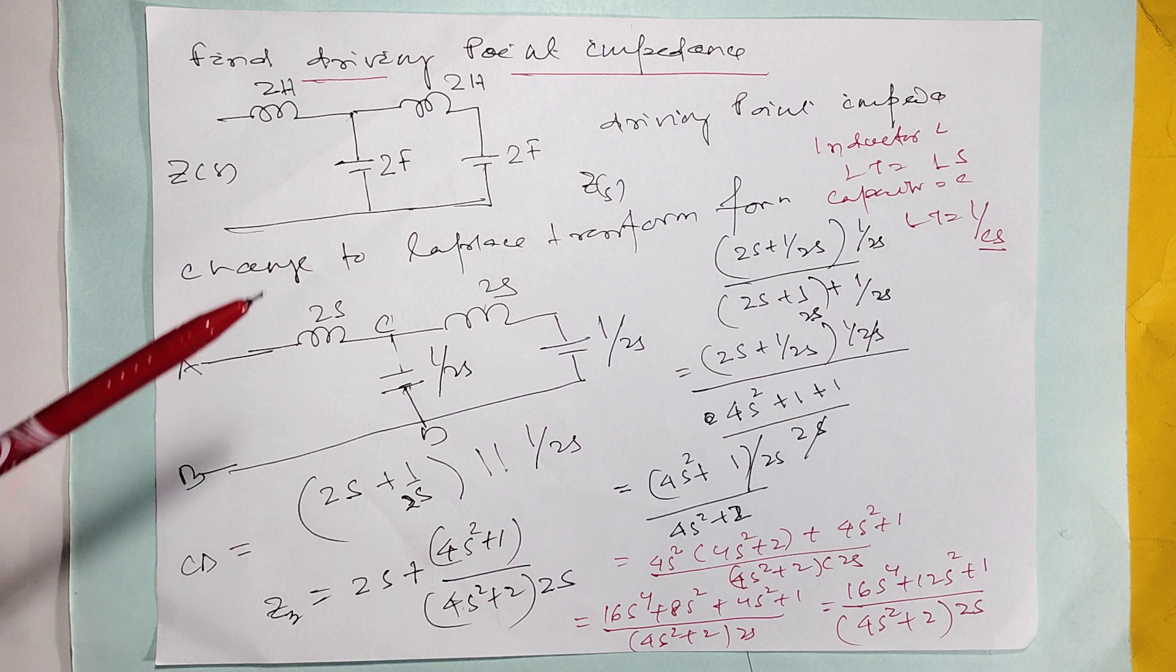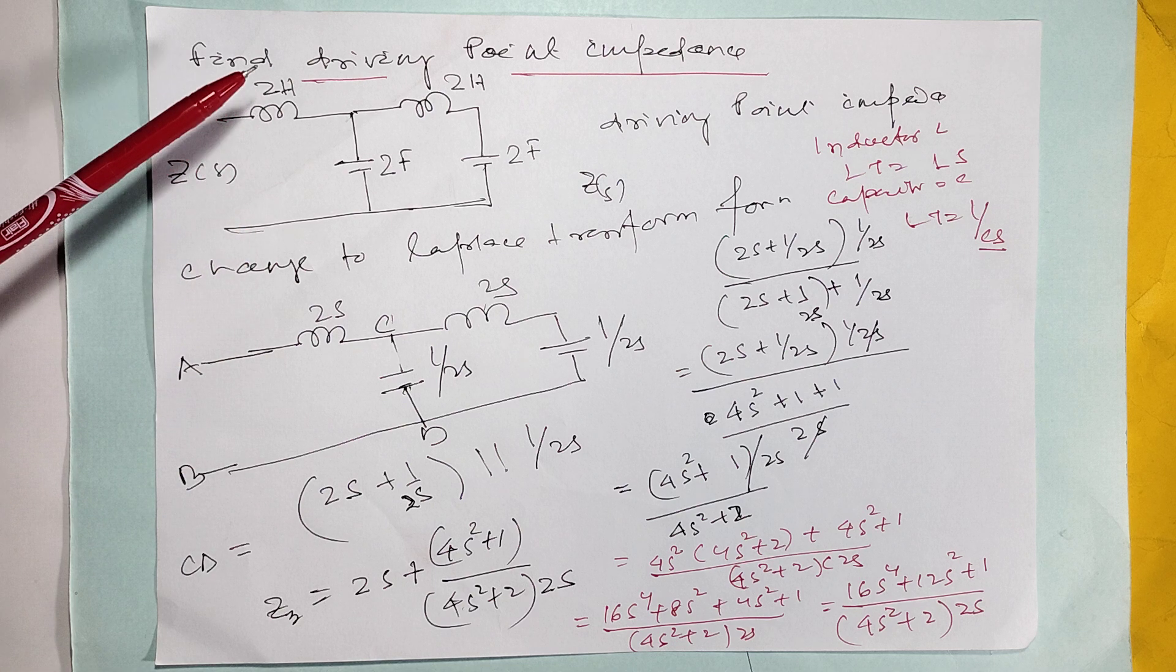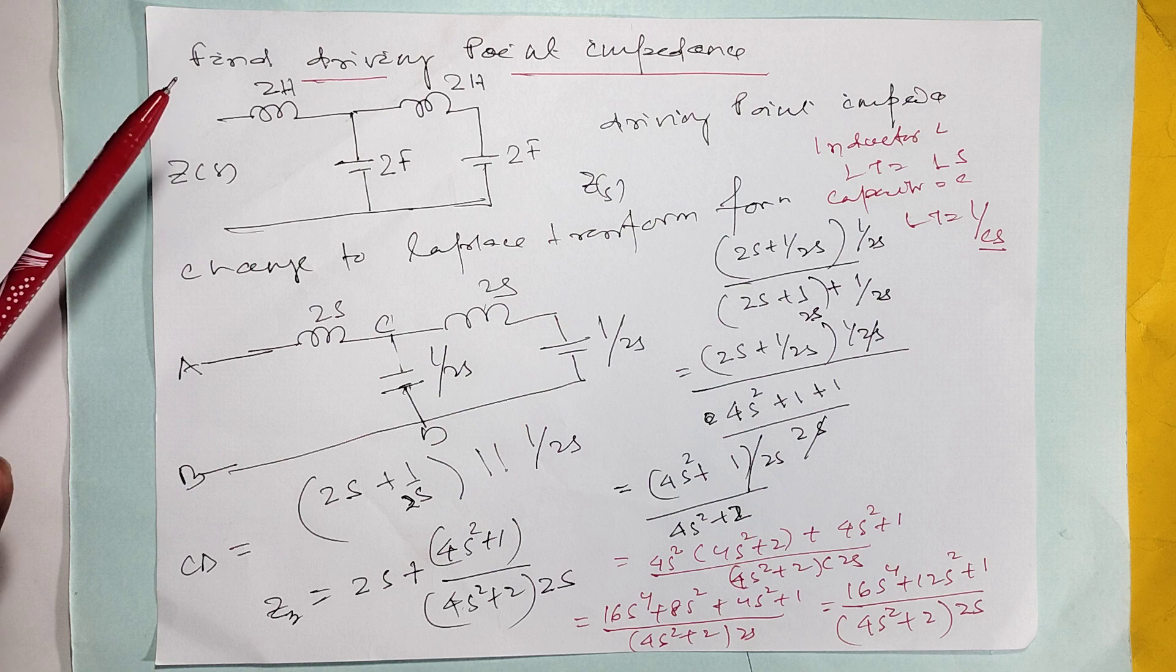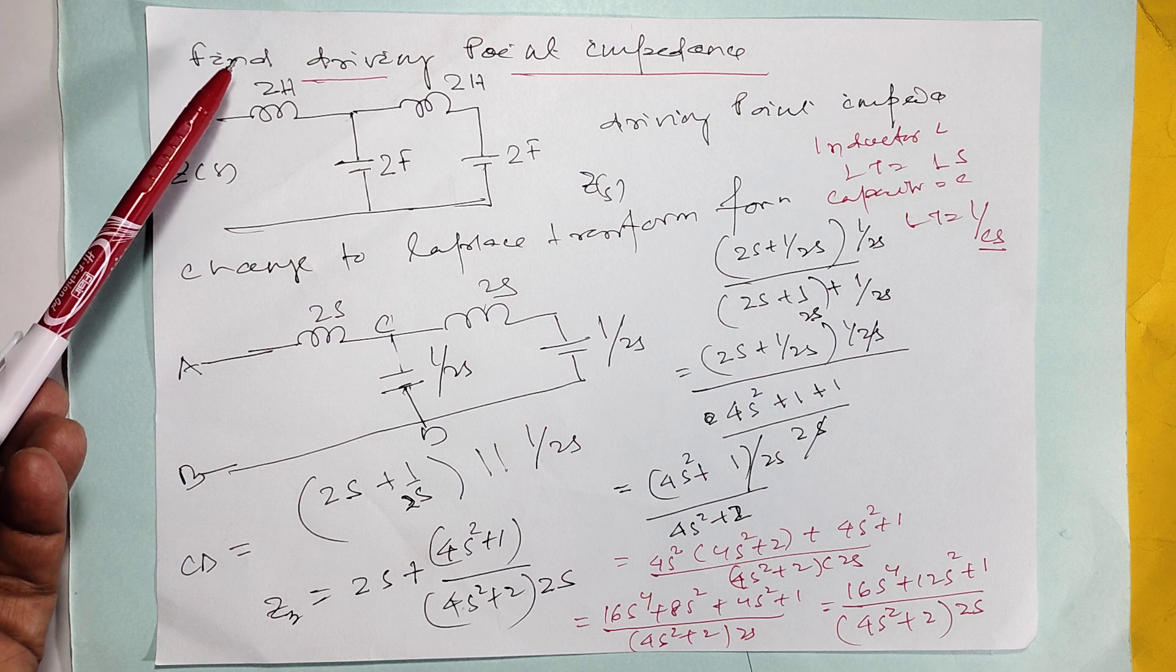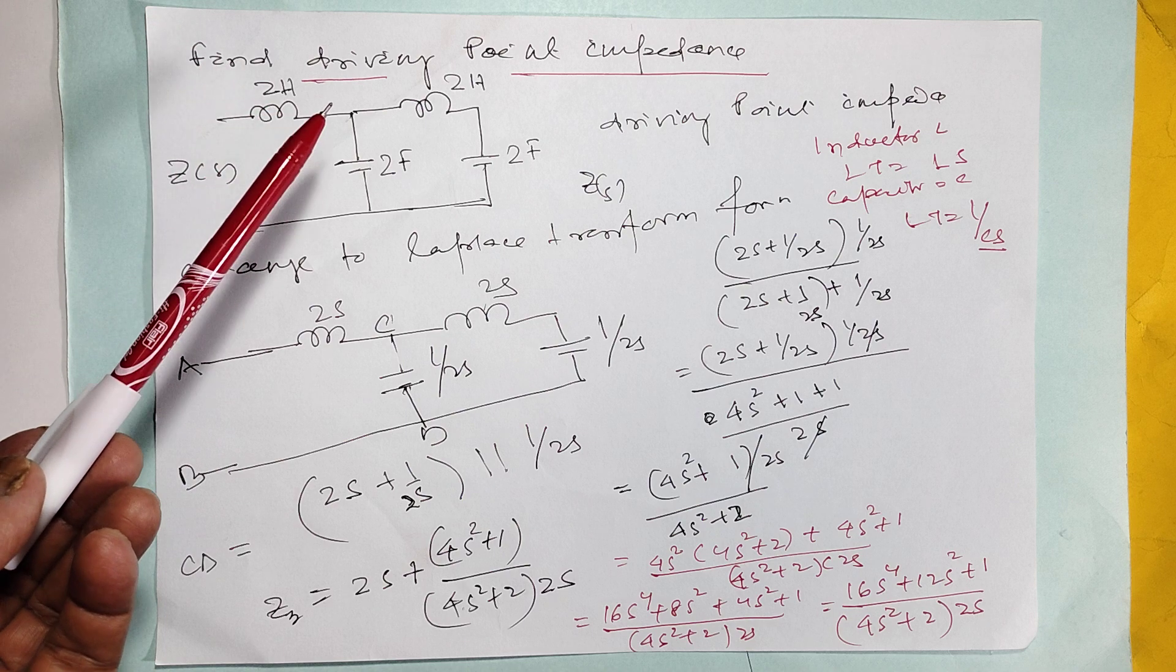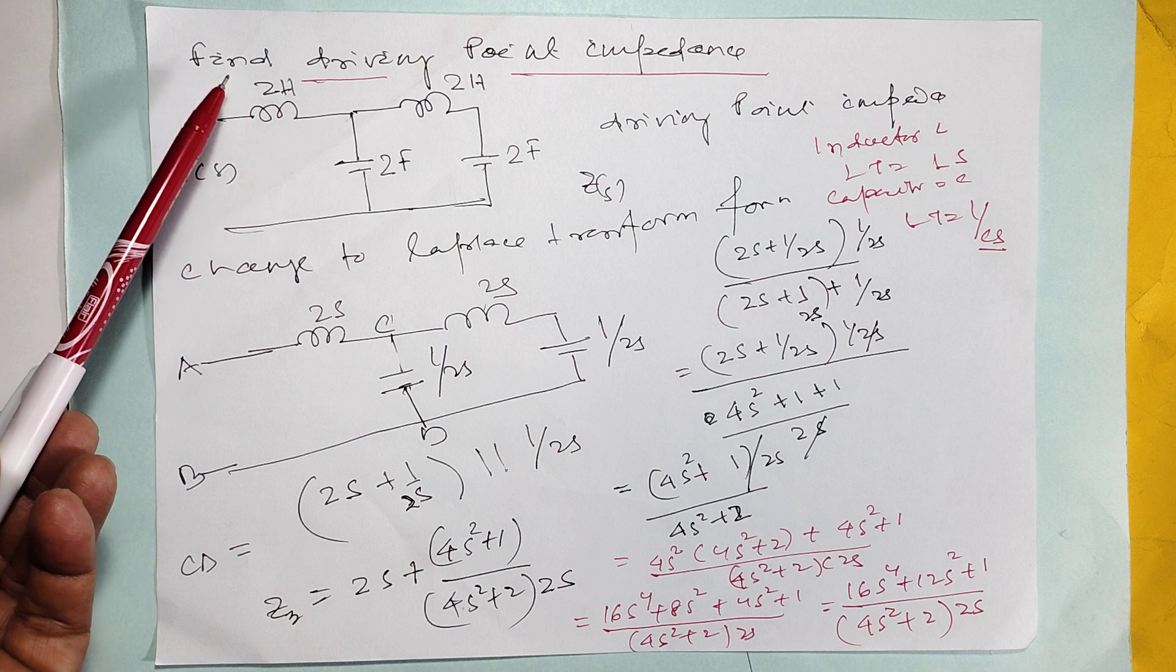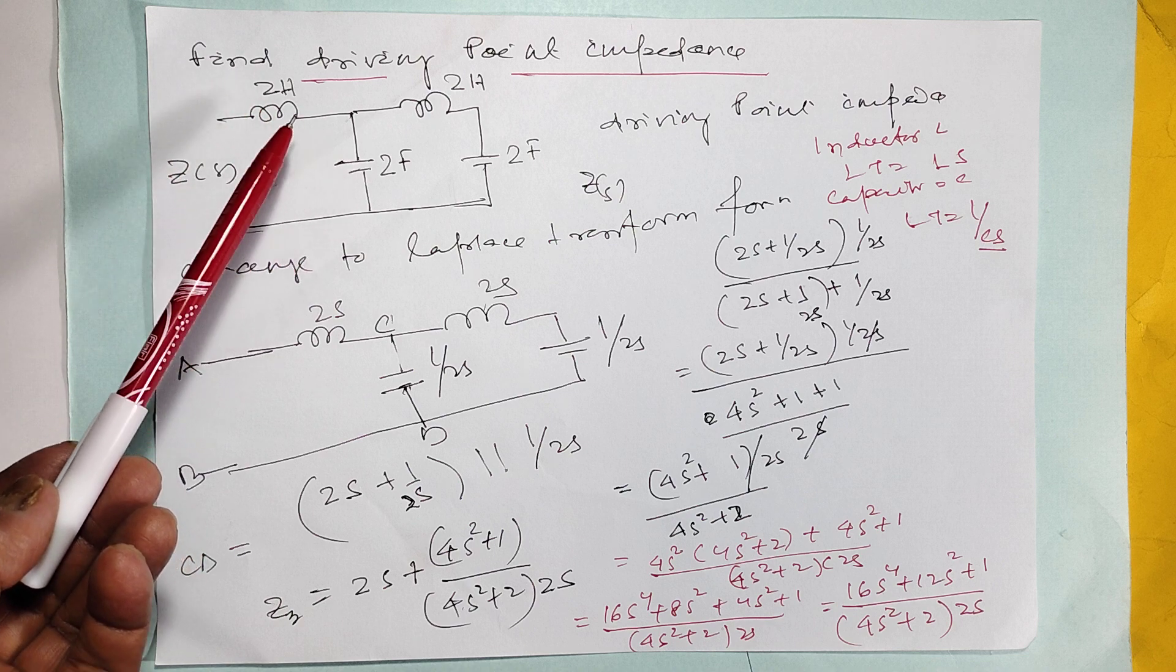Find the driving point impedance. Here nothing but 2s. Here the most important you should know is Laplace transform of inductor, that is Ls, and Laplace capacitor, that is 1 by Cs. Here L is 2, C is equal to 2.